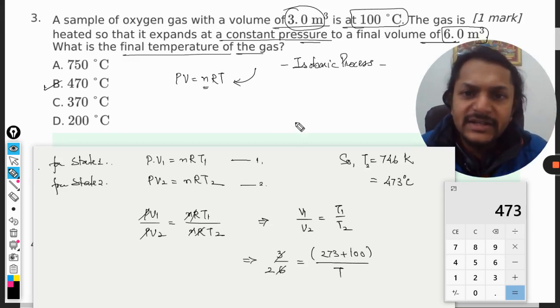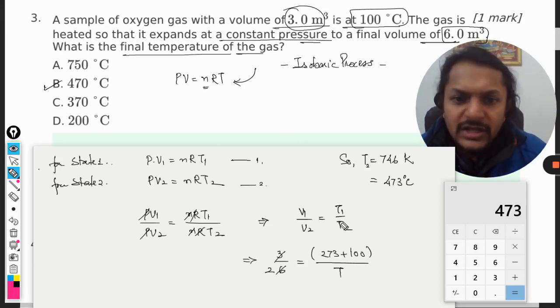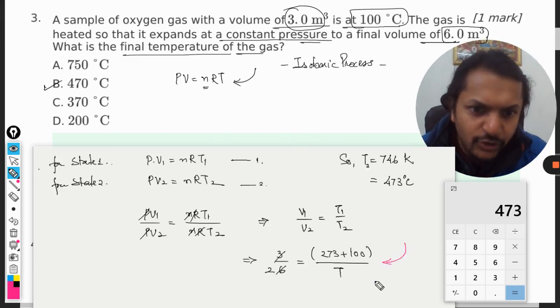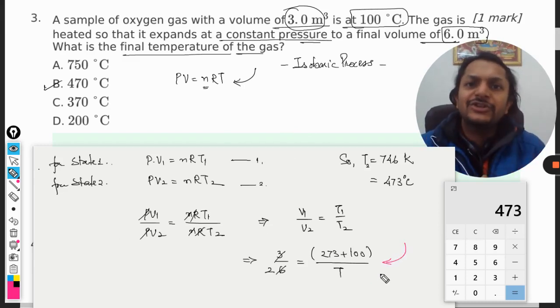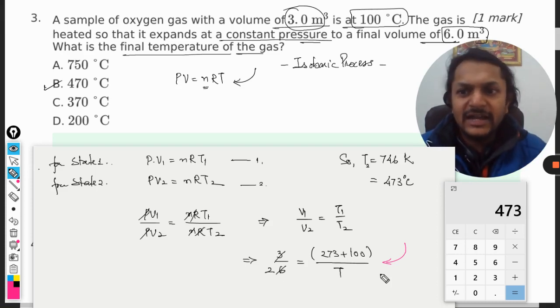Generally, what is the mistake that students do? They make a mistake here only. Instead of Kelvin, they make the calculations in degrees Celsius only, and that is why they would be getting some other answer. But this is not what we are going to do.